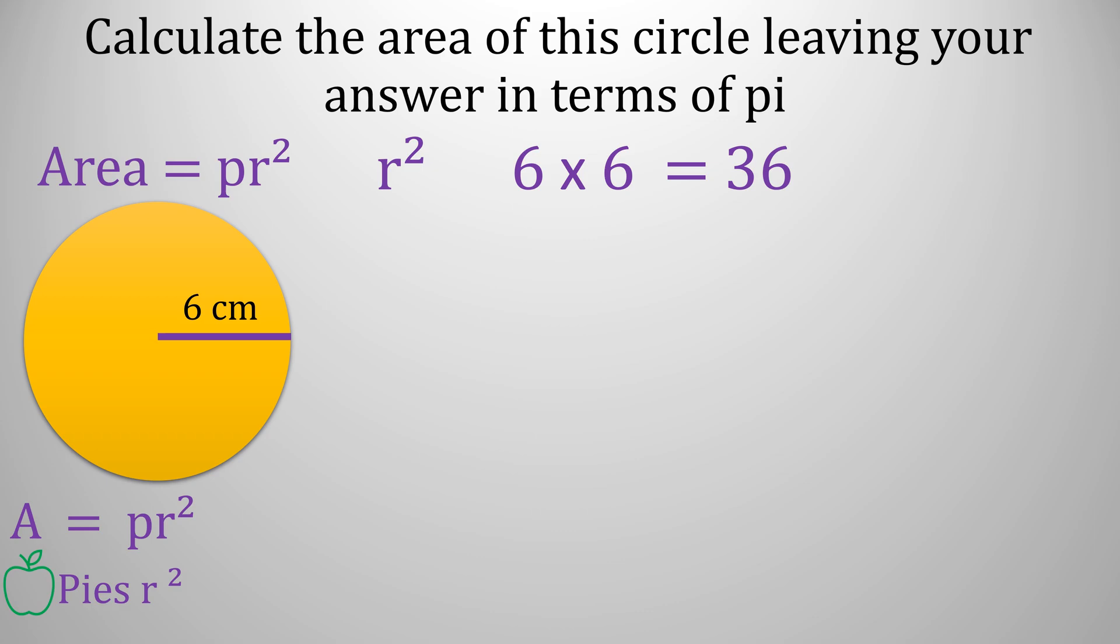And it would be pi times 36, but for this question we need to make sure we write the number first and then pi, and then the units of measurement which would be centimeter squared. So you shouldn't need a calculator and it's the exact answer in terms of pi.